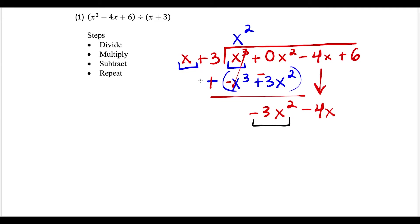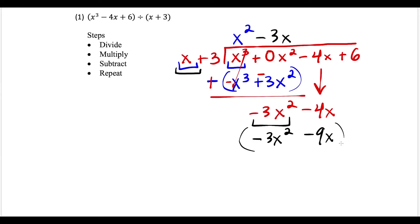We start over with our leading term minus 3x squared, still dividing by x. So negative 3x squared divided by x is minus 3x. Now multiply — negative 3x times x is negative 3x squared, and negative 3x times 3 is minus 9x. After you multiply, you subtract — but make sure you put the polynomial in parentheses before you subtract.